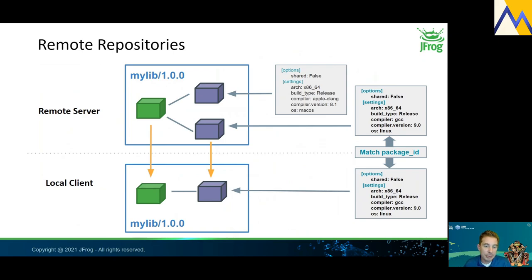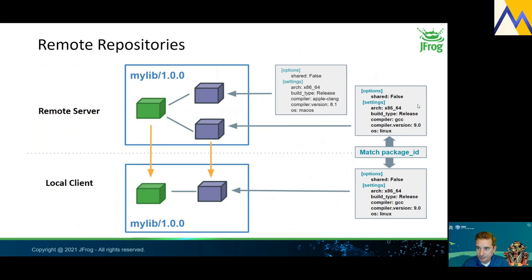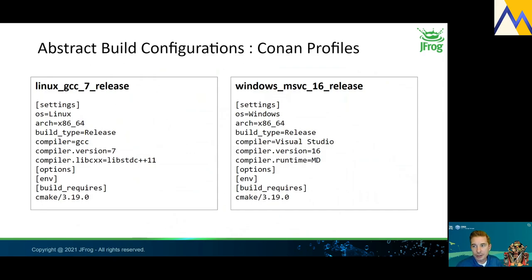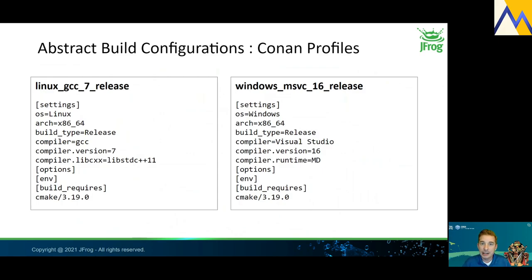Conan uses the build configuration as the input for calculating package IDs. Complete build configurations are generally referred to as profiles in Conan. Users can store Conan profiles as text files in this format and then pass the file names to various Conan commands. This can be much more manageable than passing each value to Conan as individual flags, which is less reproducible and less manageable. We will actually use both of these profiles in our upcoming exercises today — building a GCC binary with GCC version 7 on Linux and an MSVC binary with MSVC 16 on Windows.